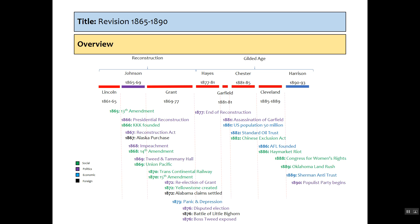You can see we've got social changes and some of the key things that you should be able to identify, define, and then say how they've changed society. We've got the political acts — the disputed election, Boss Tweed being exposed, and the end of the Tammany Hall whiskey ring. We've got the end of Reconstruction, Garfield's assassination, and then the Populist Party beginning in 1890. We've got the economic impact: the Gilded Age with population reaching a certain size, Standard Oil, the AFL being founded, and then the Sherman Antitrust. You should be able to define what these are.